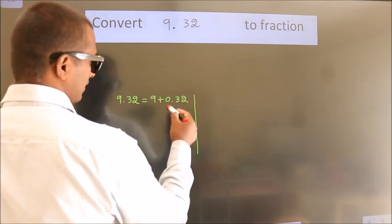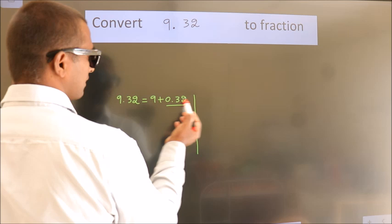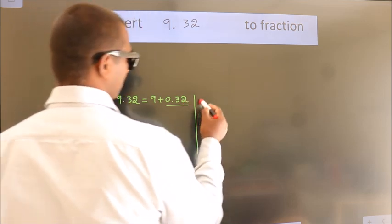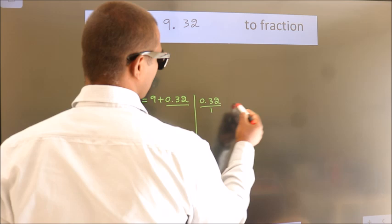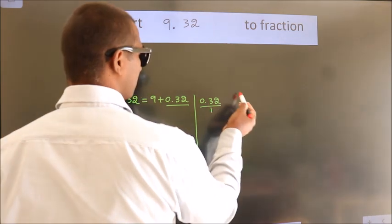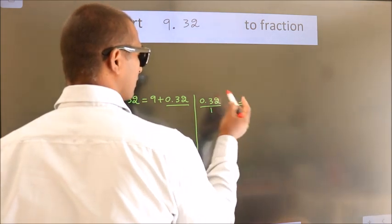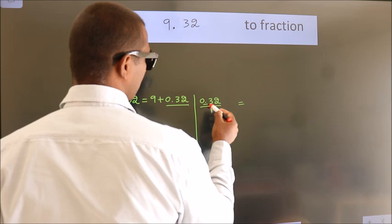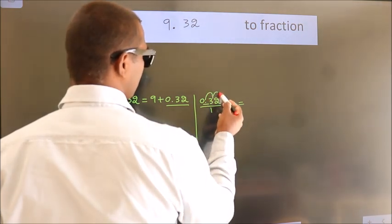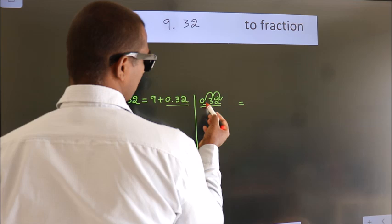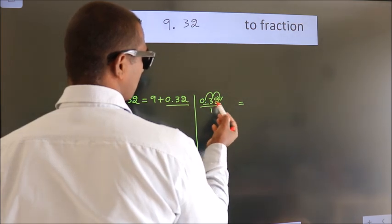Next, convert this to fraction over here. So 0.32. To convert this to fraction, we have to move this decimal after 2 numbers. To move this decimal after 2 numbers,